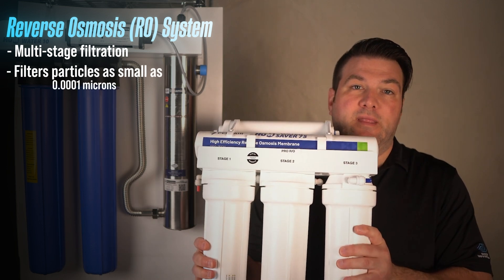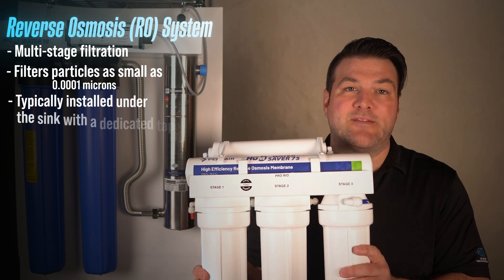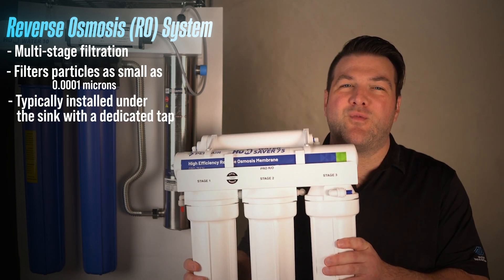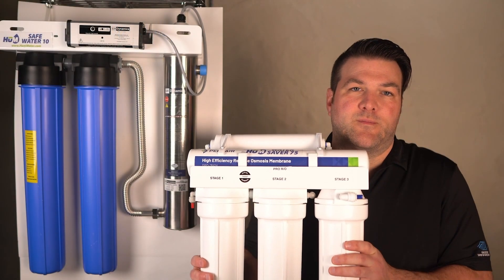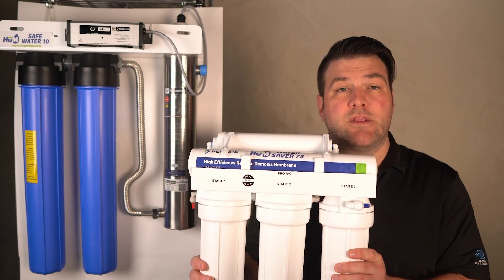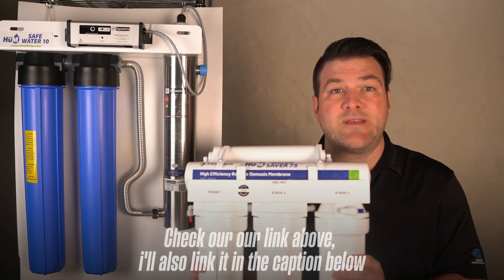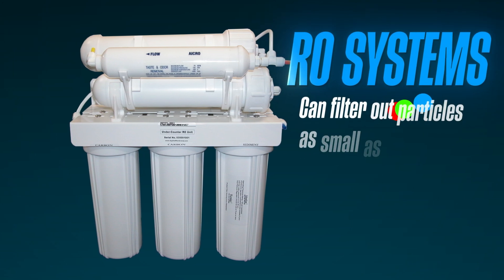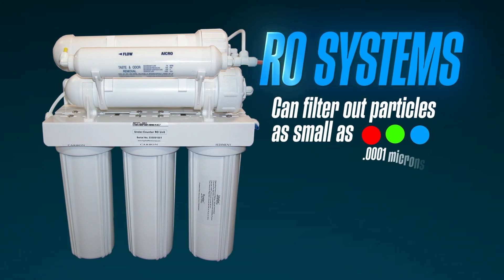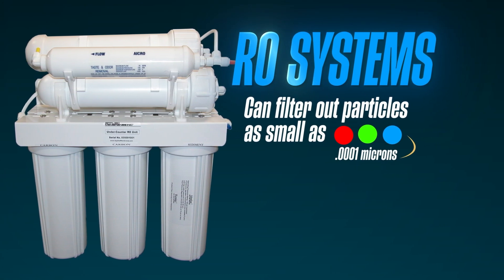A reverse osmosis unit like this will typically only have one tap that's next to your sink. Here at the Water E-Store, we sell a lot of these reverse osmosis units, and it really does give our customers peace of mind. If you're interested in learning more about reverse osmosis units, please check out our link above. Reverse osmosis systems can filter out particles as small as 0.0001 microns, which includes microplastics.